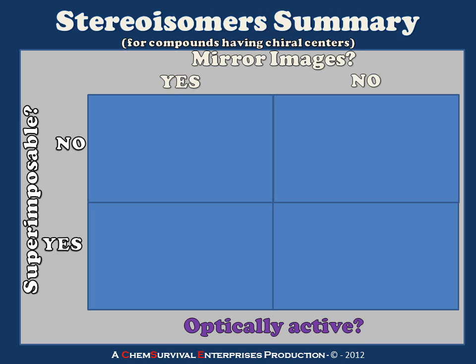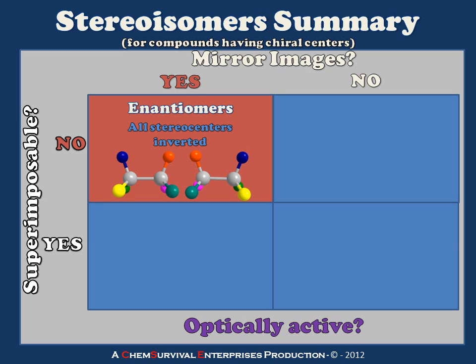Now let's summarize what we've covered with respect to the three major types of chiral center-containing compounds. I have a table with two axes: superimposability, and whether the two compounds are a reflection of one another. Starting with non-superimposable mirror images — we refer to these two compounds as enantiomers. Enantiomers are characterized by having all of their stereocenters inverted from one to the other. There are no symmetry elements within either molecule — no mirror planes or inversion centers — and so when worked with in their enantiopure states, they will be optically active and rotate plane polarized light.